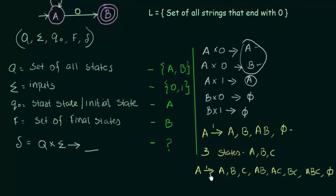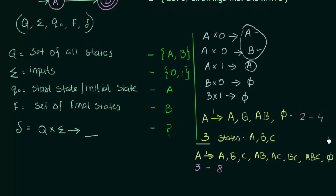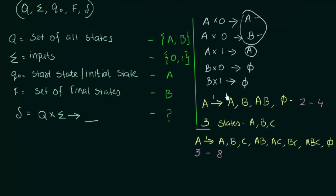So when there were three states we had eight possibilities, and when there were two states we had four possibilities. Seeing this pattern, can we figure out a formula? When there are two states there are four possibilities, and when there are three states there are eight possibilities.